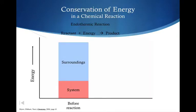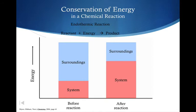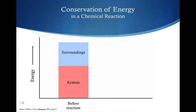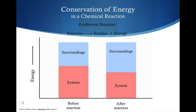In an endothermic reaction, the reactant takes in energy and the product has more potential energy than the reactants did. So before and after the reaction, in an endothermic reaction the system had less potential energy to begin with, but after the reaction had more — that is one way you can determine it's an endothermic reaction. In an exothermic reaction, the system had more energy before, but after, the surroundings have more of the energy.